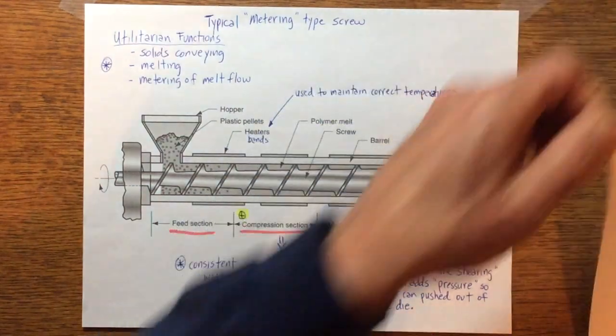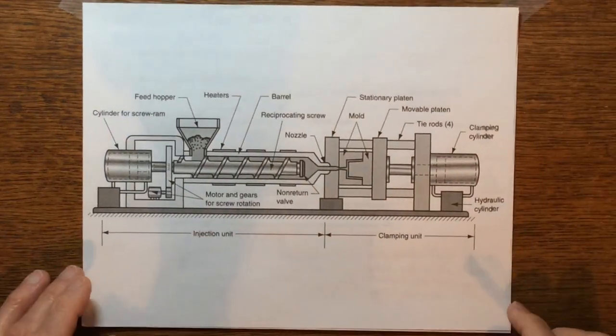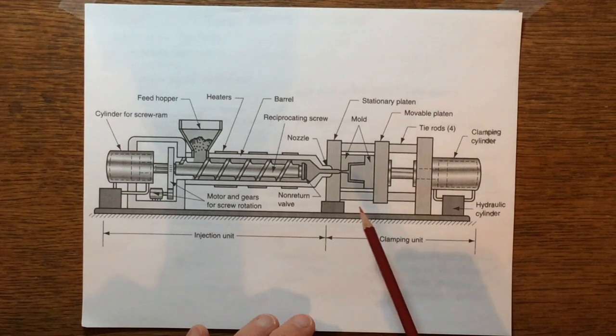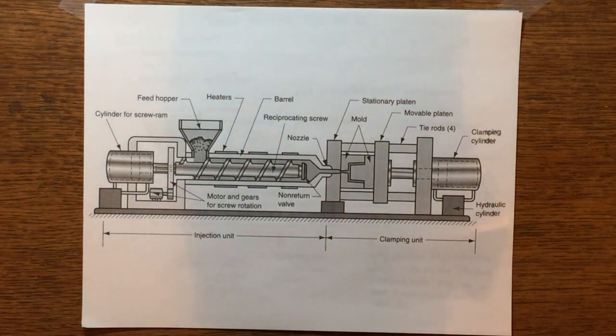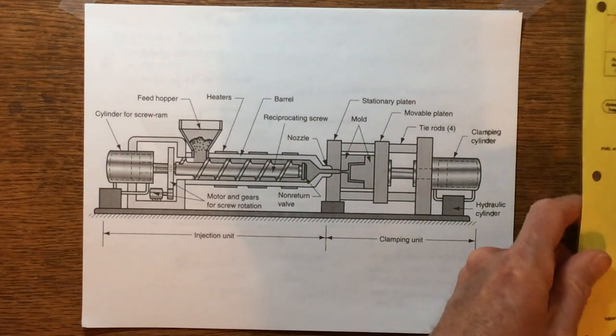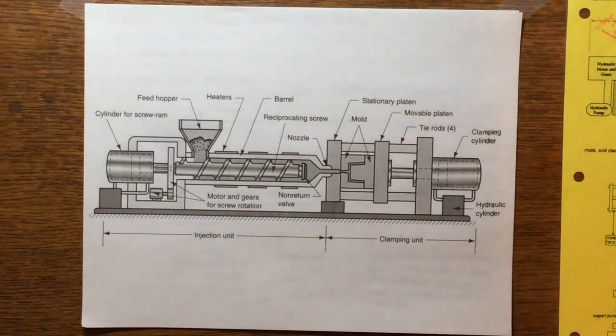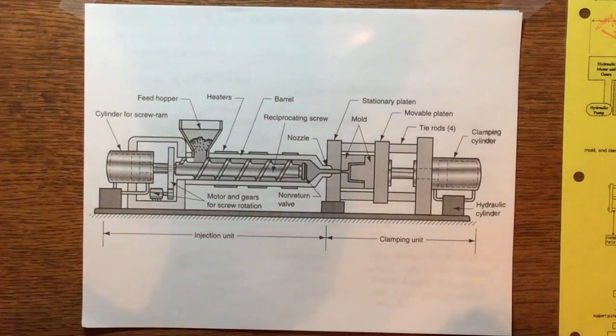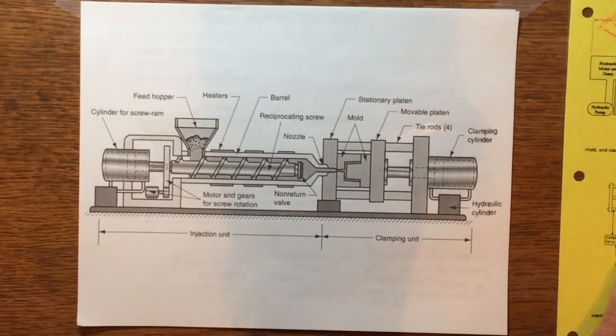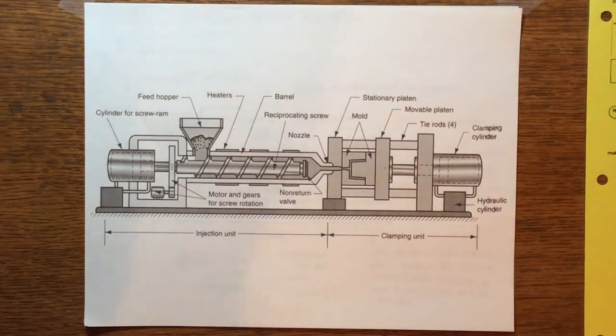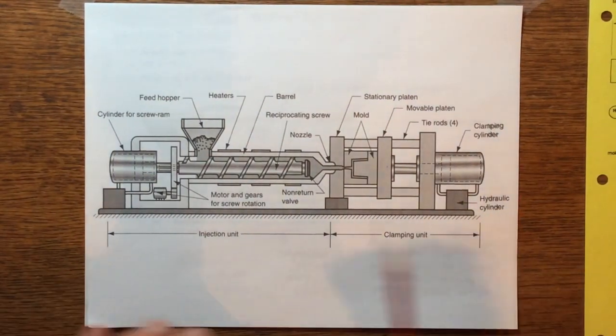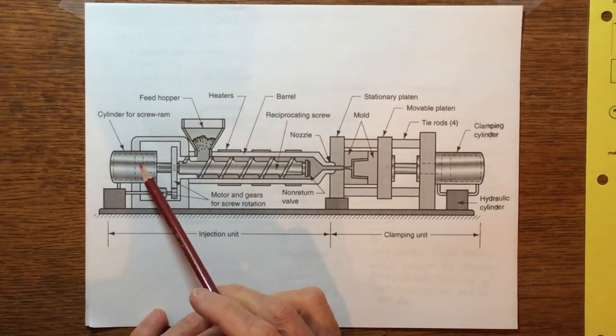Okay, so this is a view of an injection molding machine. You can see this section right here is very very similar to what we had on the other machine, on the extruder part. So I wanted to kind of show you some of the specific areas that can lead to this process.